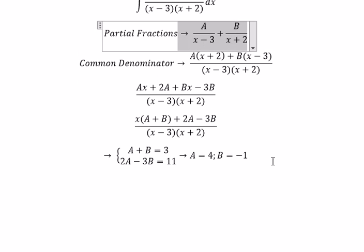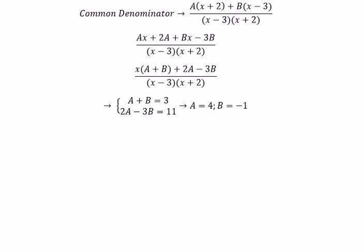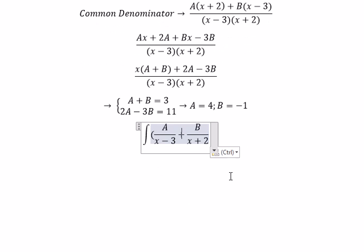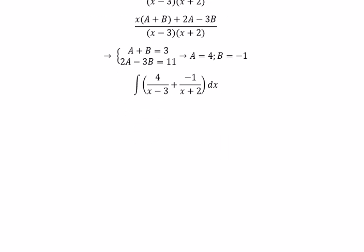So we can put inside the integral. A, we go about number 4, B that's about negative number 1. And now we can get the final answer.